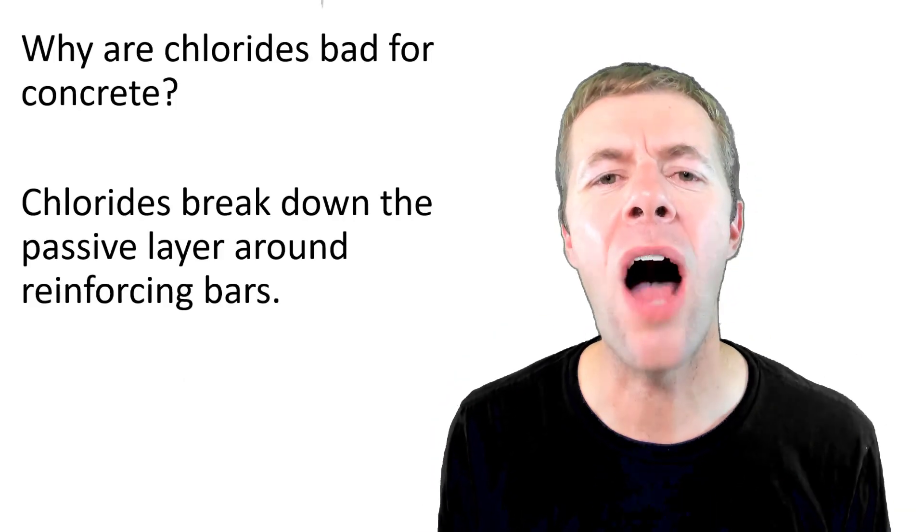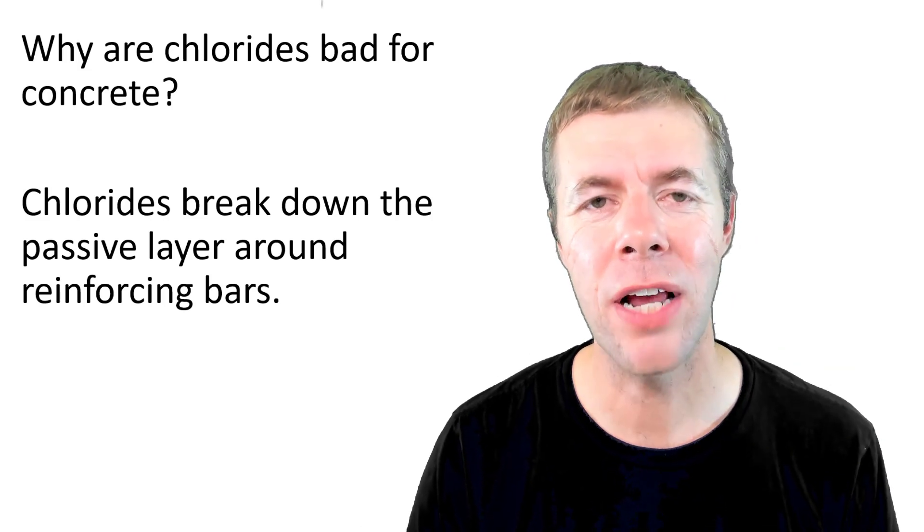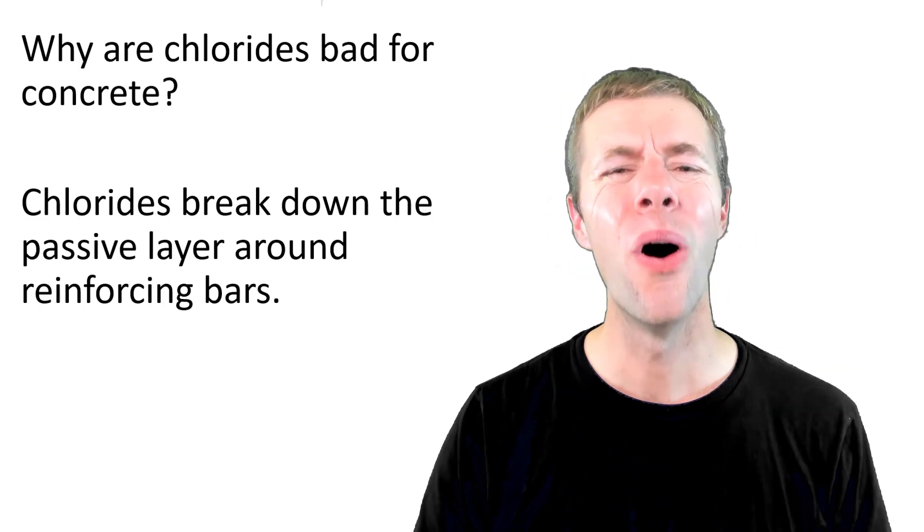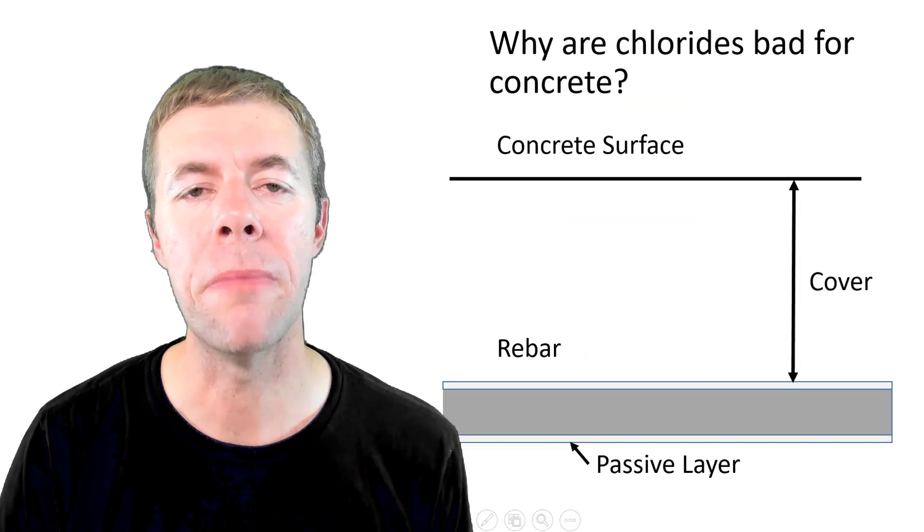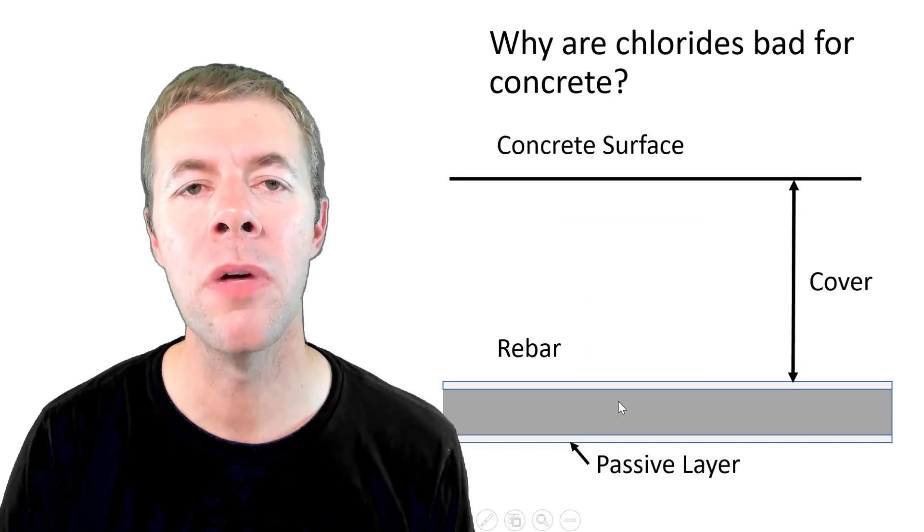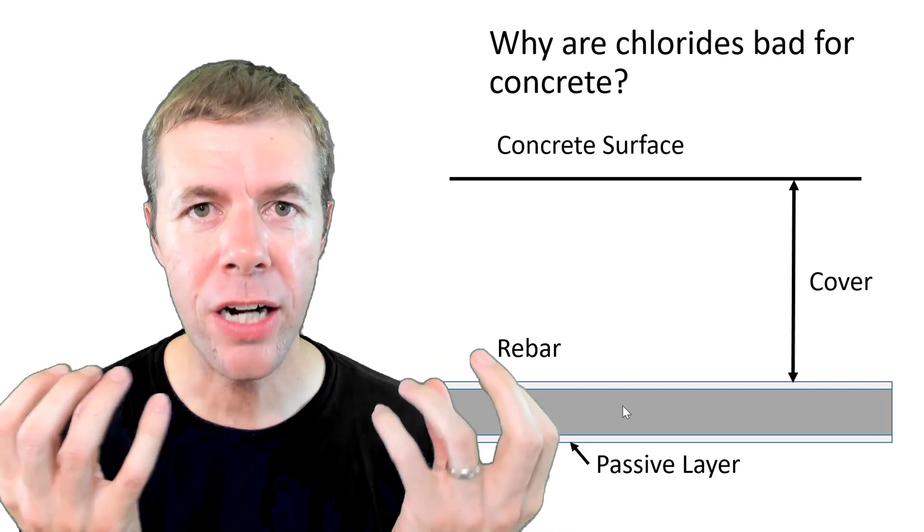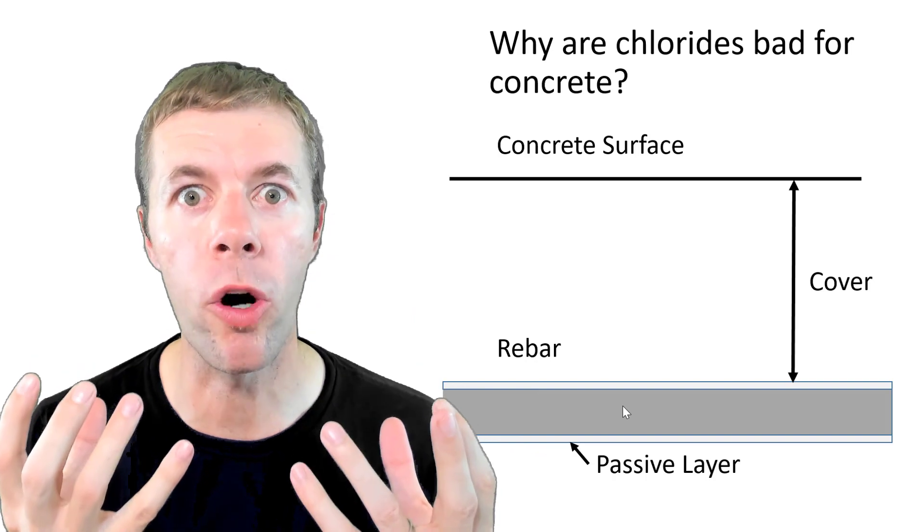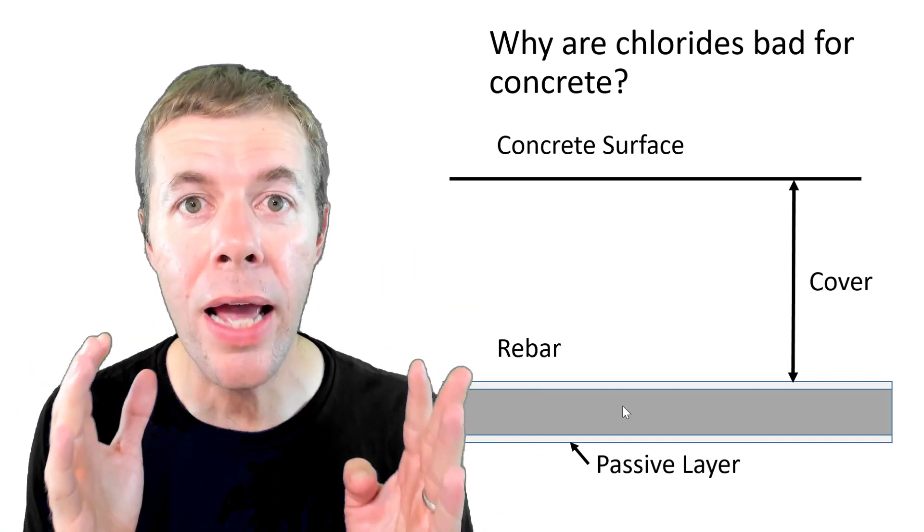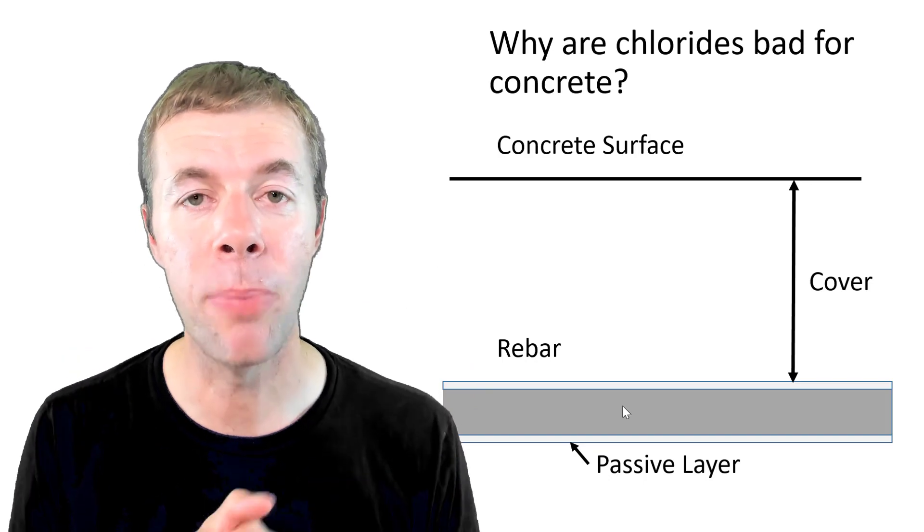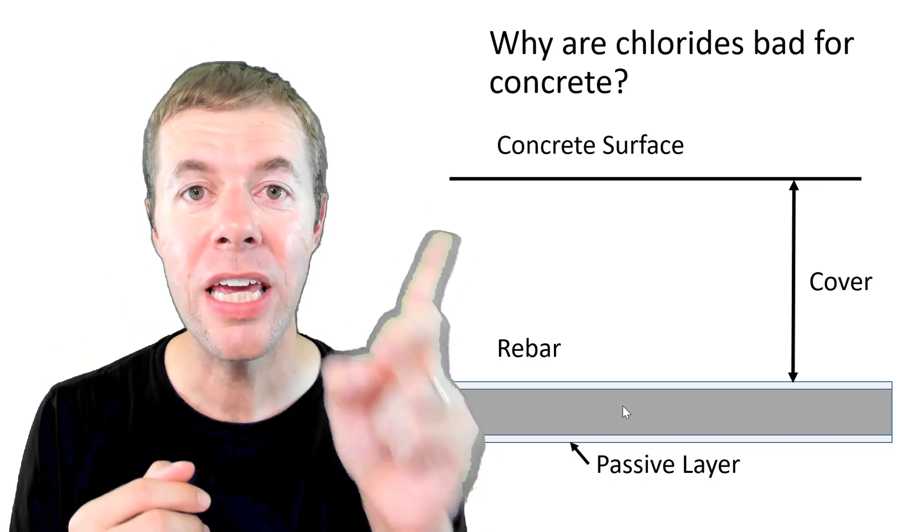Chlorides break down something called the passive layer inside of concrete. Like what? What's the passive layer? Here's a picture of the inside of concrete. I'm showing a rebar at the bottom with this passive layer around it. This is the protection that the concrete forms around the rebar because the concrete's got a real high pH in the pore solution. I've talked a whole video about it that I'm going to reference here.